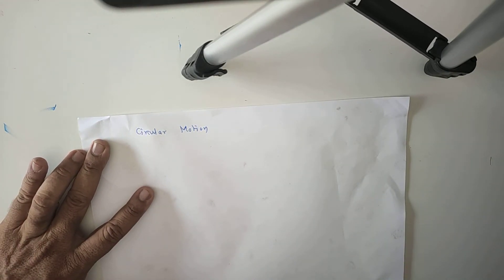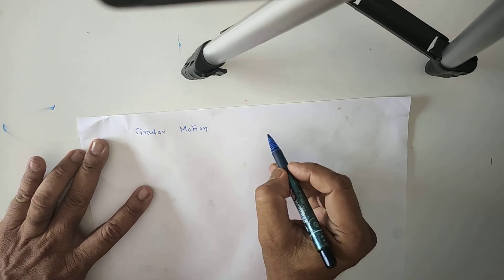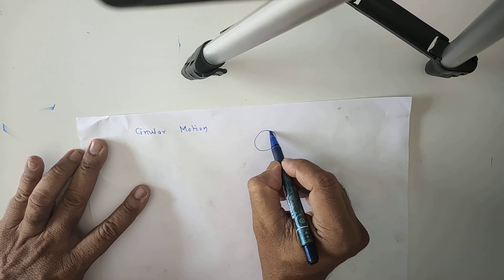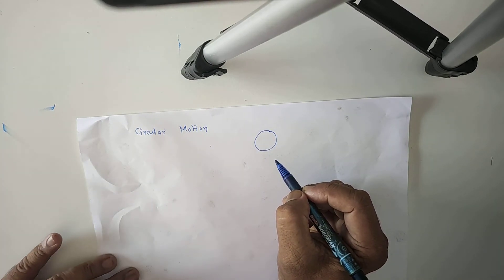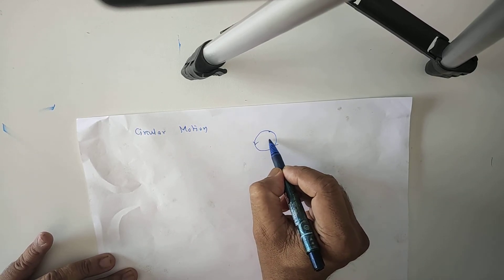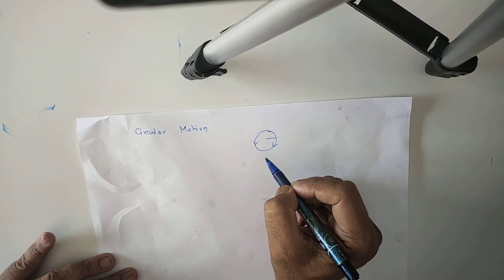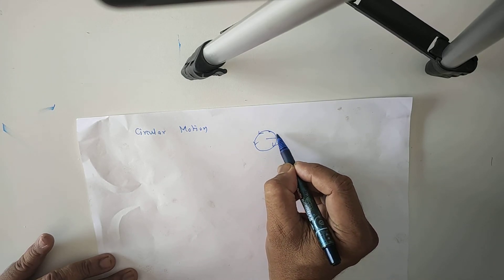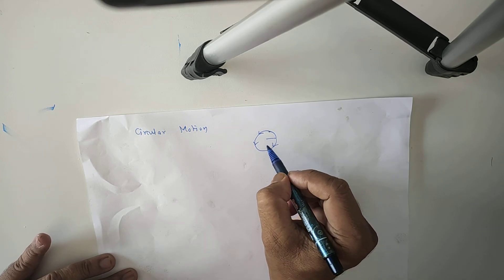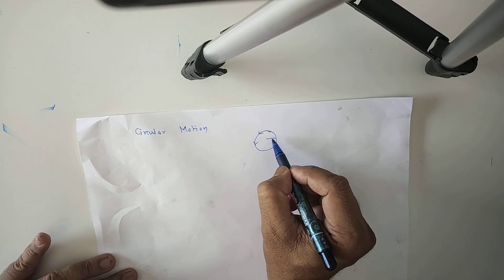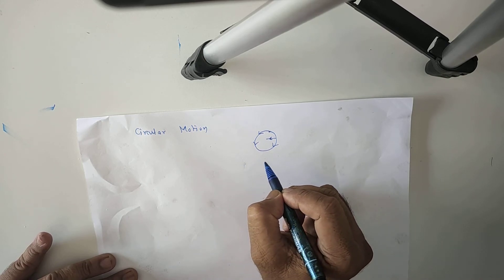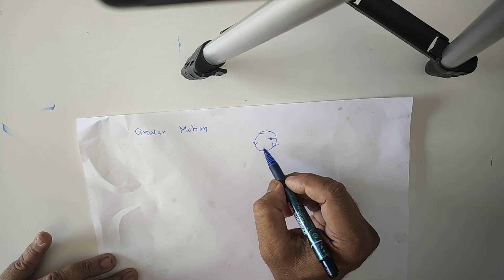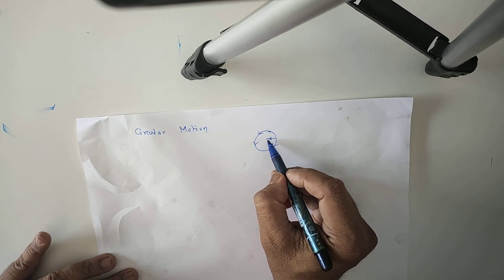The motion when we tie a string with stone and if it moves along a circle, then this stone moves around circle and we are pulling the stone towards center of that circle and are applying force towards it.